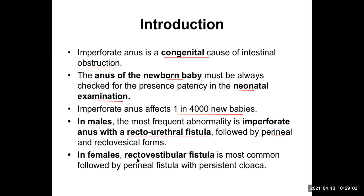In females, recto-vestibular fistula is most common, followed by perineal with persistent cloaca. Cloaca is an embryological structure from which the urinary bladder and rectum are formed, and there is a persistent fistula at that site. So in females, recto-vestibular fistula is associated with imperforate anus, whereas in males, recto-urethral fistula may be present. The vestibule is the area around the vulva.